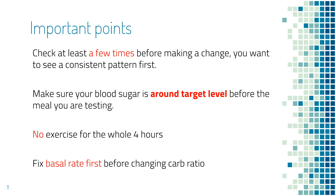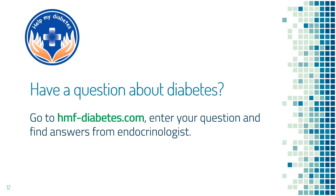The fourth, but very important point: make sure your basal rate is correct for the meal time before making a change to carb ratio, otherwise you will not know whether the change in blood sugar is due to carb ratio or basal rate. To find out if your basal rate is correct, go to hmf-diabetes.com, search 'how to change basal rate in insulin pump,' and you will be able to see answers from an endocrinologist.